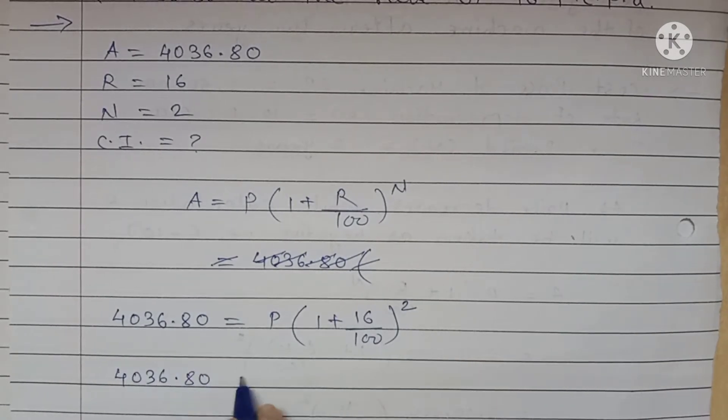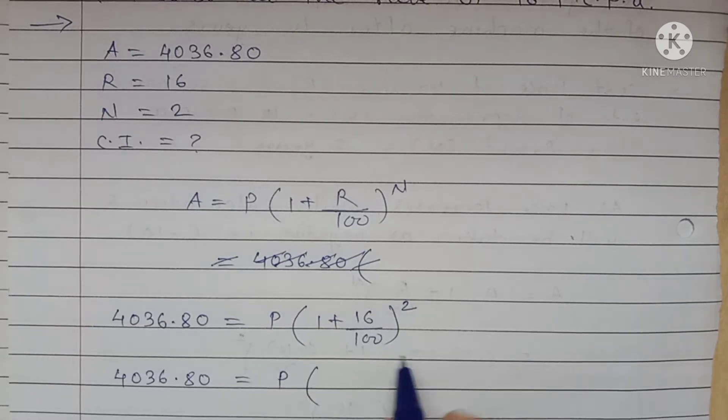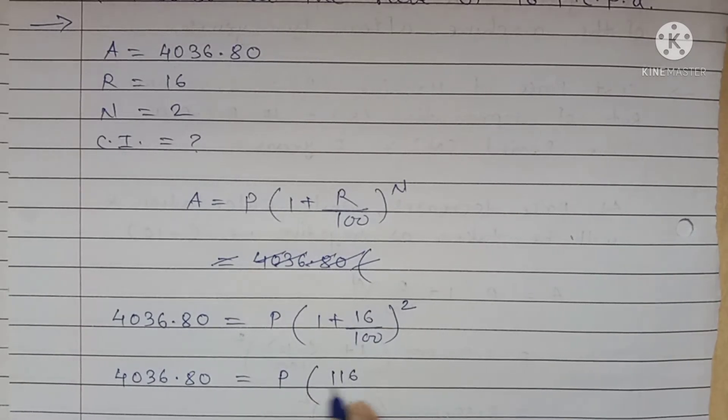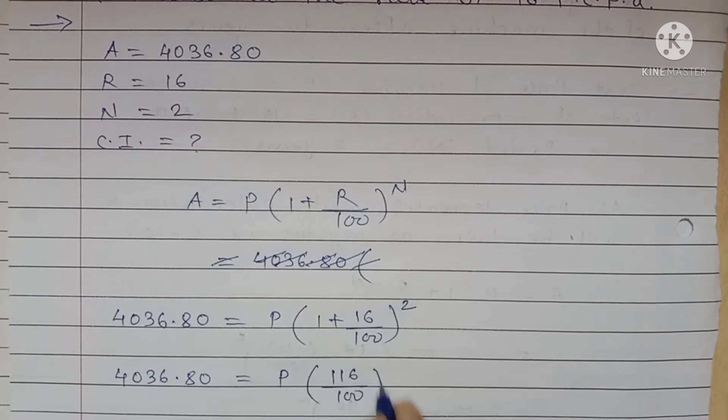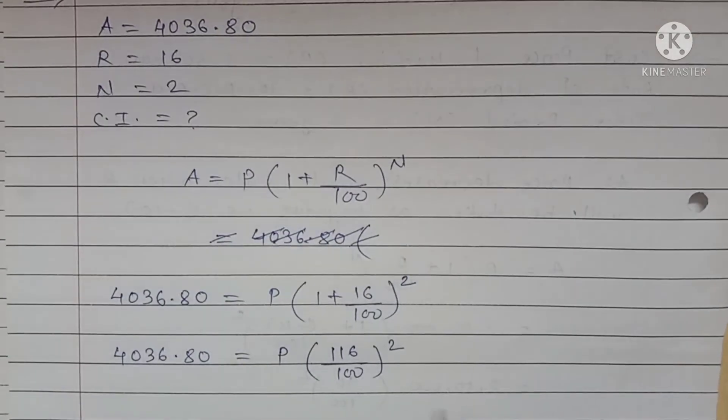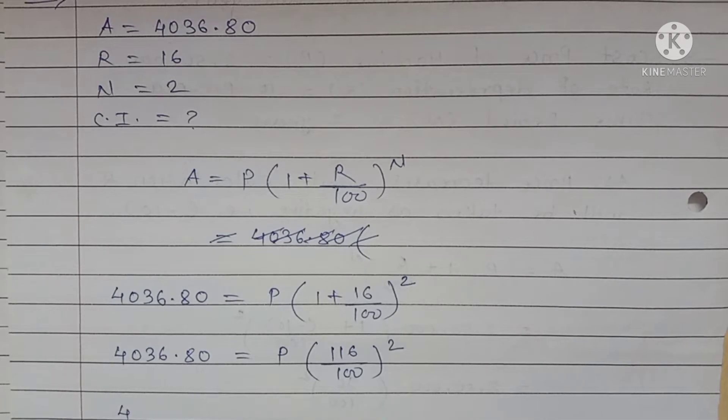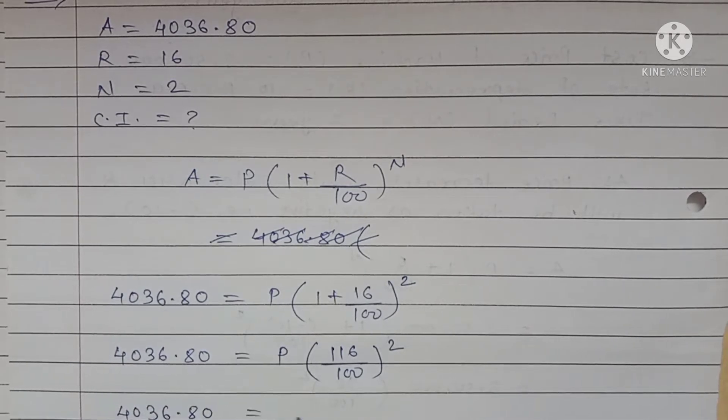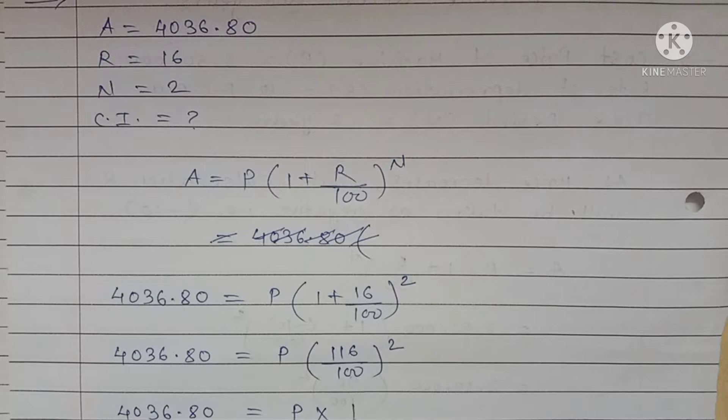4036.80 is equal to P into bracket, 100 once a 100, 100 plus 16 means 116 upon 100 bracket square.